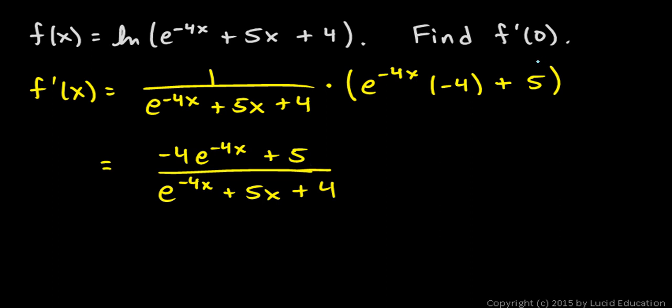Now we need to find f prime of 0, so we just need to put in 0 for x. This is going to be negative 4 times e to the 0, which is 1, plus 5, over e to the 0, which is 1, plus 5 times 0, which is 0, plus this 4.